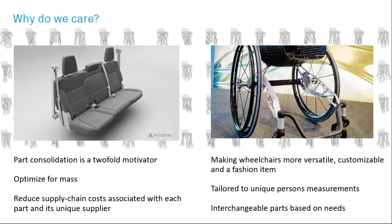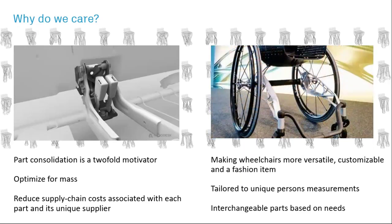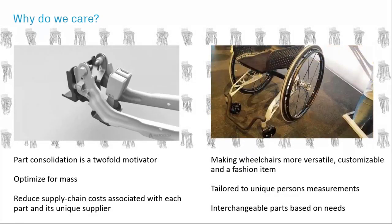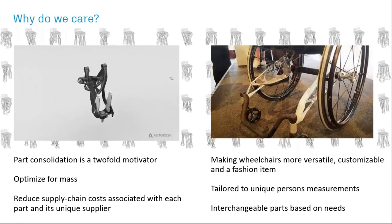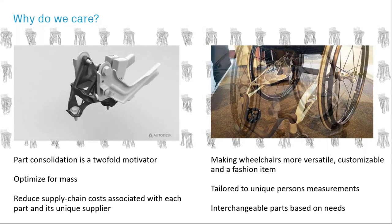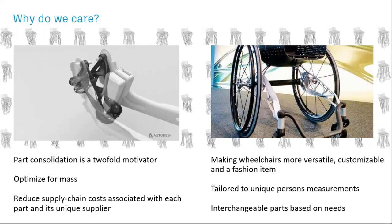As we get into introducing the program, it's smart to start with: why might you care? Obviously everybody cares at least to some small extent — you're here in the presentation. The program is a functional program available from Autodesk, and people are leveraging it now in different industries. On the left-hand side you see the General Motors bracket, which you may have seen in some publications. They took a multi-part assembly and consolidated it down using generative design into a single component.